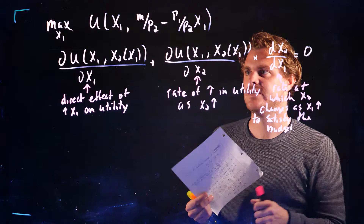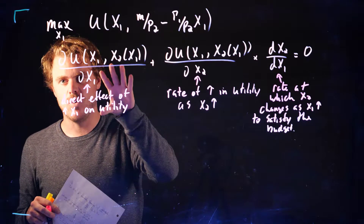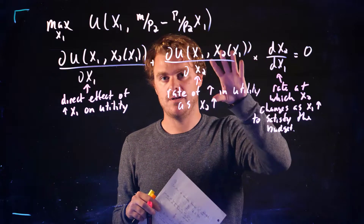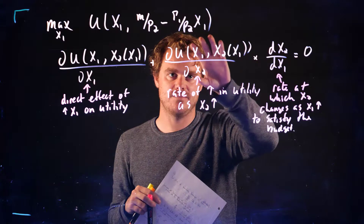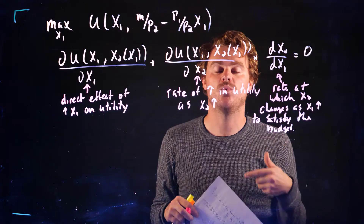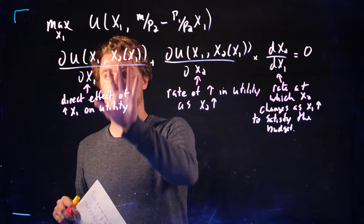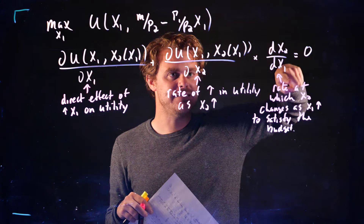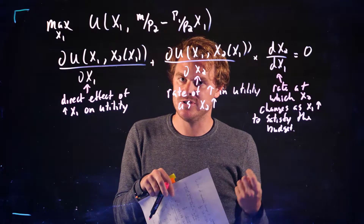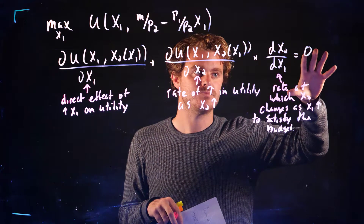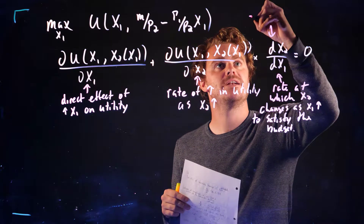To summarize: the first term is the direct effect of increasing good one on utility; the second partial derivative is multiplied by the rate at which x2 changes as x1 increases, ensuring we satisfy the budget constraint. When this expression equals zero, we know that dx2 over dx1 is actually negative p1 over p2 — that price ratio.